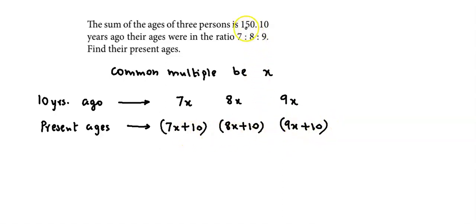And present ages, the sum of them is 150. That means 7x plus 10 plus 8x plus 10 plus 9x plus 10 is equal to 150. Now, 7x plus 8x, that is 15x plus 9x. This is 24x. 10 plus 10 plus 10, that is 30 is equal to 150.